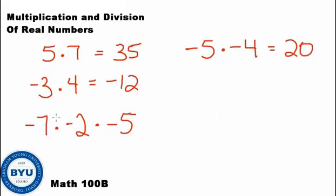A negative times a negative is a positive number. So if you have an even amount of negative numbers, it's going to be positive. If you have an odd amount of negative numbers that you're multiplying together, it's going to be negative. So take a look at this one. Negative 7 times negative 2 times negative 5. Well that answer is going to be negative. And we would just multiply those together. So 7 times 2 is 14. Times 5 is 70. Negative 70.